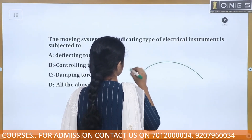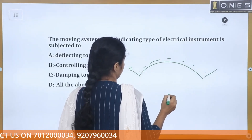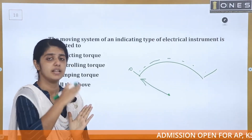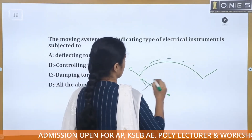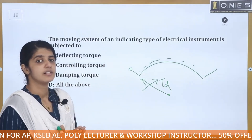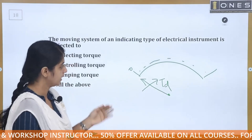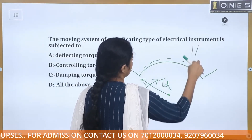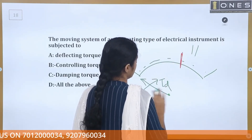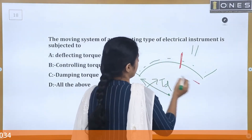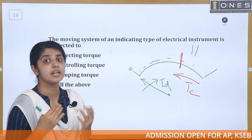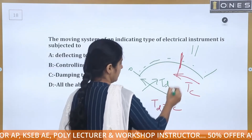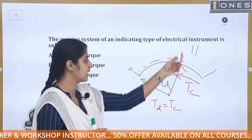The pointer is initially at zero position. When deflecting torque acts, the pointer deflects. The next torque is controlling torque — it opposes the deflecting torque and brings the pointer to rest. When deflecting torque equals controlling torque (Td = Tc), the pointer rests at the deflected position.